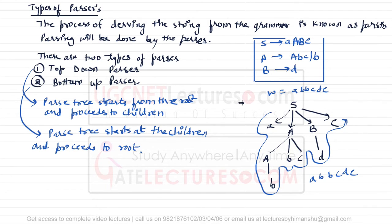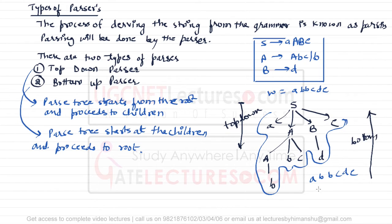The top-down parser tries to generate from the top to the end, that is from the root to the children. The bottom-up parser starts from the bottom and goes to the top — given a string, it tries to go back to the previous production, identifying how to reduce symbols back to the start symbol.